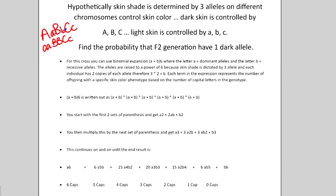Now that we know the F1 generation, we need to figure out the F2 generation. The easiest way to do this is with binomial expansion. The formula starts with (A + B) to the sixth power, where A represents the number of dominant alleles and B represents the number of recessive alleles. We raise it to the sixth power because skin shade is dictated by three alleles, and each individual has two copies of each allele — three times two is six.